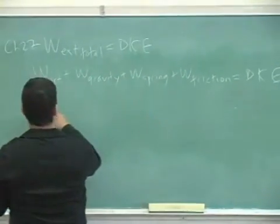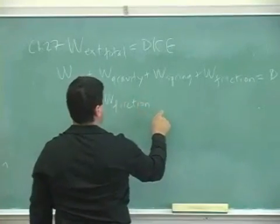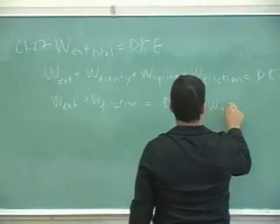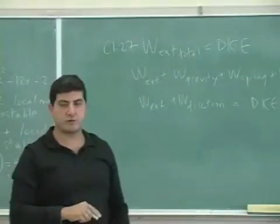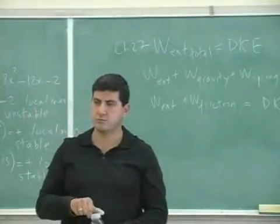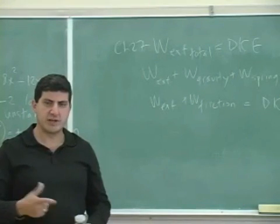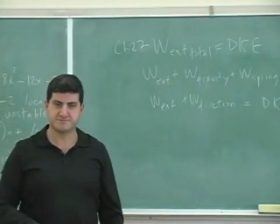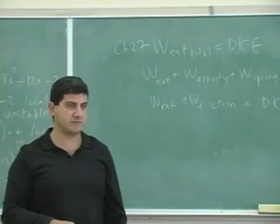We can split this up so that work external plus work of friction equals change in kinetic energy minus work of spring minus work of gravity. Why are we going through this trouble of just rewriting the equation when we already know how to use it? Why am I splitting gravity and spring and putting them on the other side? It has to do with something I just finished talking about — it starts with the letter C: conservative forces.